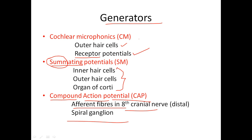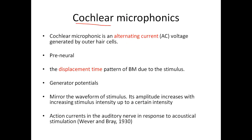Moving on to the first potential — the cochlear microphonic. Why is it called microphonics? Because in 1930, these authors took a wire electrode, placed it on the nerve of a cat, whispered a sound into the ear, and recorded the electric output. They could hear the whispered speech. Initially they thought it was from the neural level, but later scientists proved it was from the cochlea. It mimics a microphone — a microphone picks up speech and converts it to electric signal — so they named it cochlear microphonics.